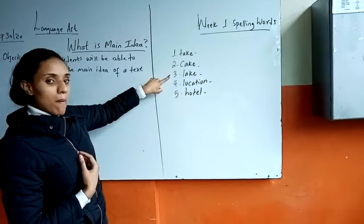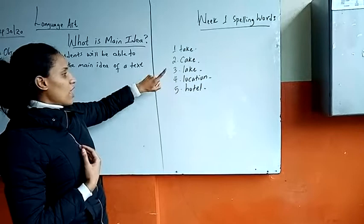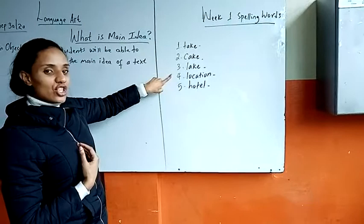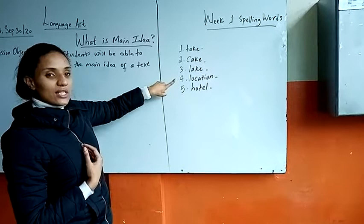The next spelling word is 'location.' For example: my location is around Boli.